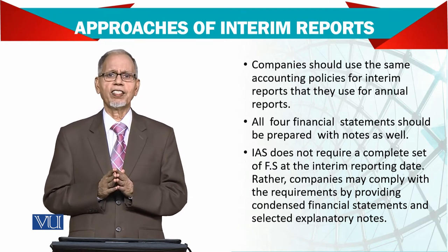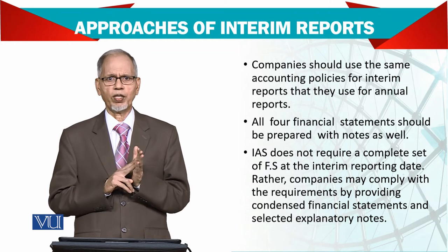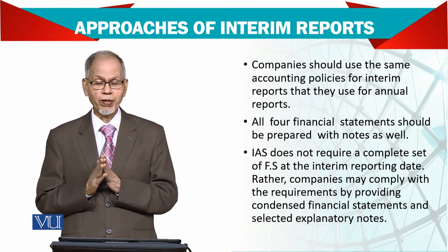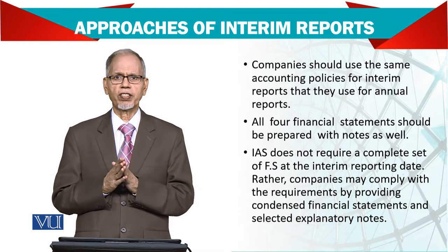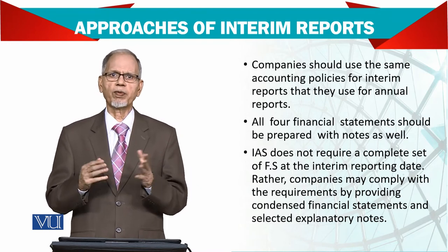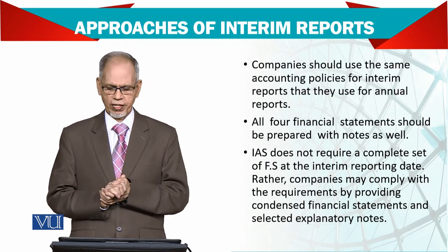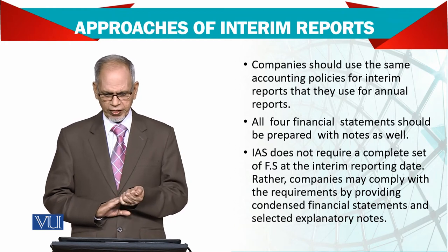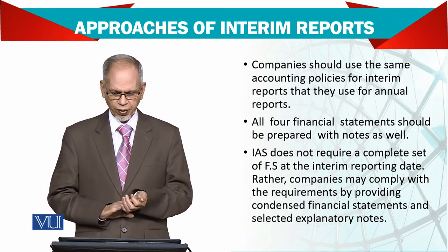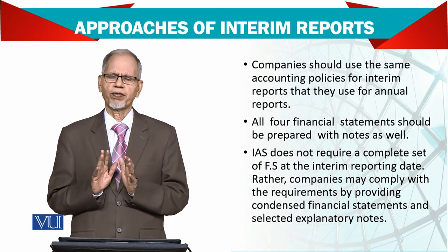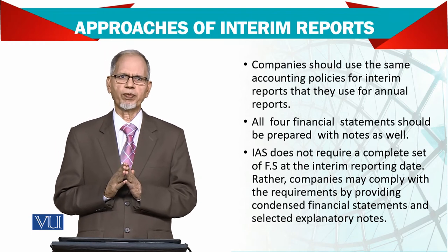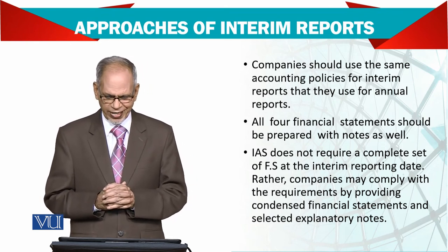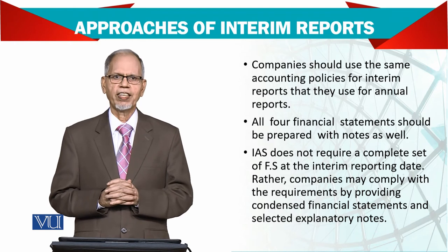Generally, people are interested in performance, which can be assessed through two things: the income statement and the cash flow statement. Normally people prepare these two, or some prepare all four, but what is typically published is the balance sheet and the income statement. IAS does not require a complete set of financial statements at the interim period date. Notes to the accounts may not need to be detailed — brief notes are enough to understand the quarter's performance. Companies may comply by providing condensed financial statements and selected explanatory notes.